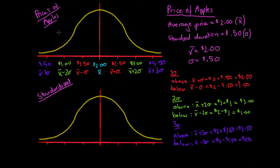So this is what our unstandardized price-of-apples curve looks like, and it makes sense: the average price is $2, most apples cost between $1 and $3, and very few cost below $0.50 or above $3.50 per kilogram. For statistical analysis, we take this unstandardized curve and standardize it.